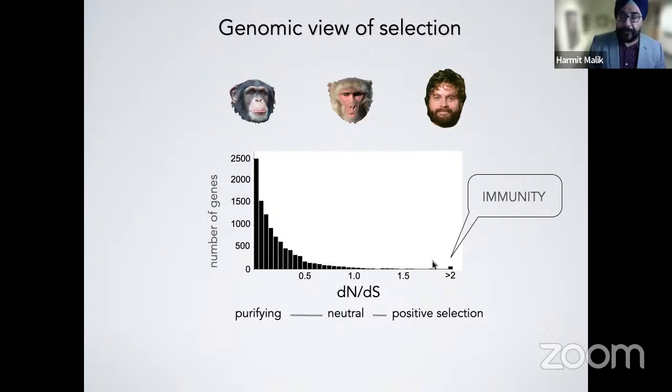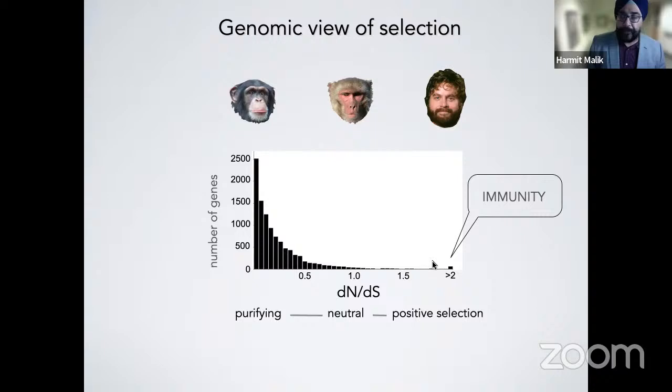We realized that if we could narrow down where positive selection was occurring — where rapid amino acid evolution was happening — we would not expect it to be randomly distributed over the protein surface. We expect it to be concentrated on residues that maximally affect the binding affinity between interacting proteins. What I'd like to tell you about is one vignette where we use this evolution-guided approach to understand the biochemistry and virology of these interactions.